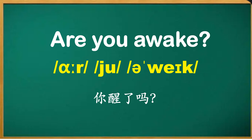現實中，這句話呢，常常讀作：Are you awake? 弱度為 are you awake? 它讀成 ya，他讀成 ya，連在一起。弱度為 are you awake?